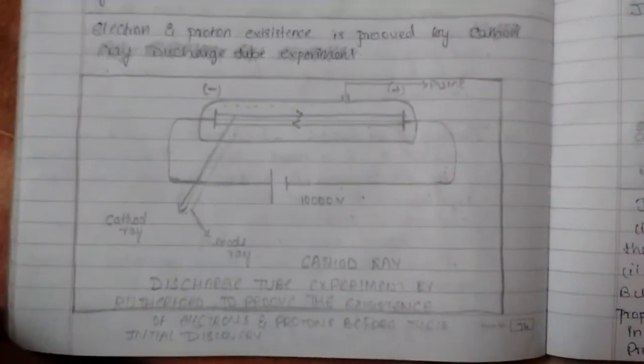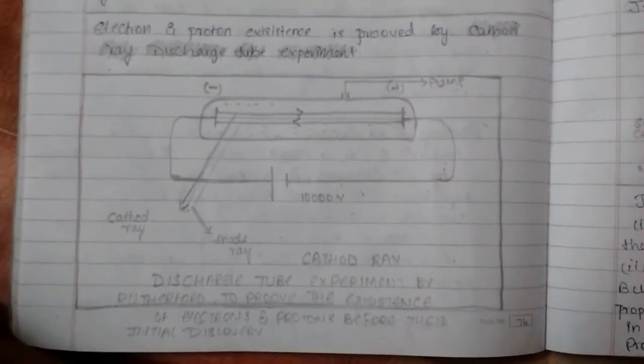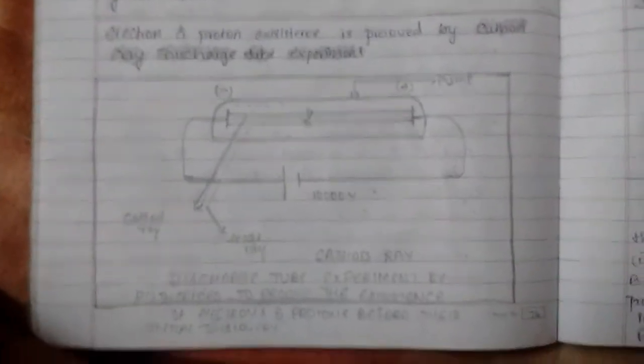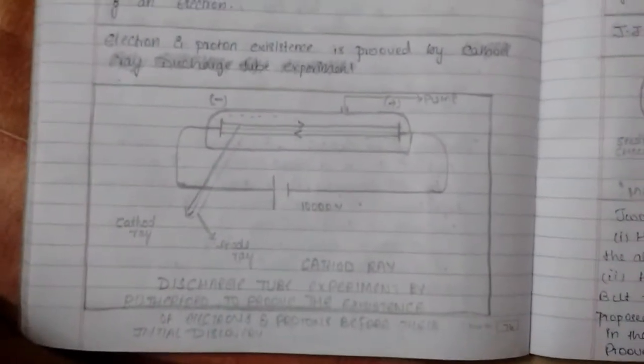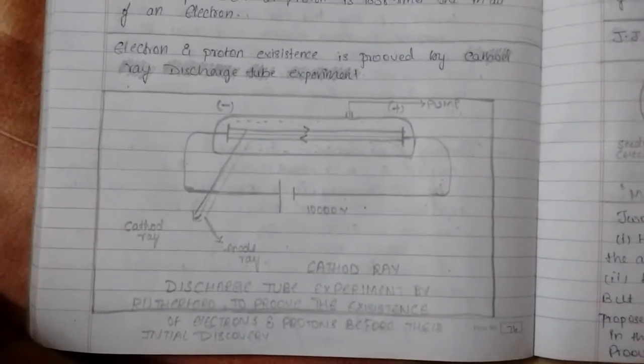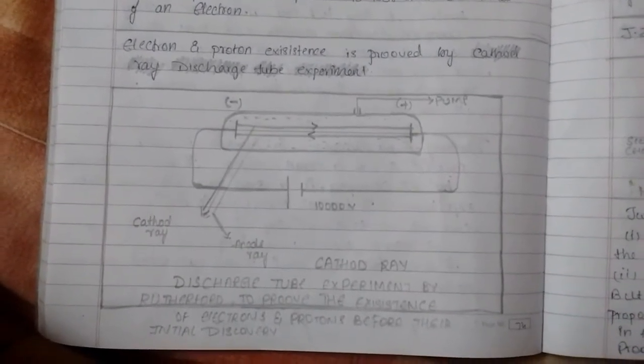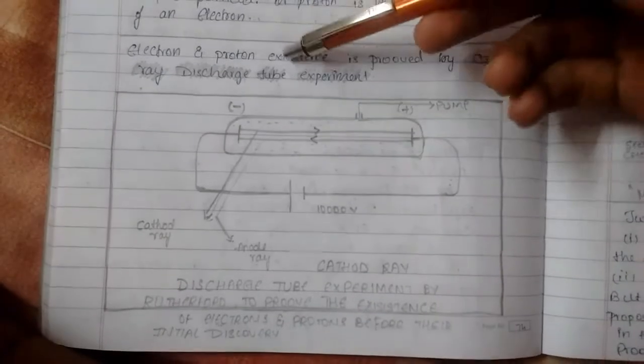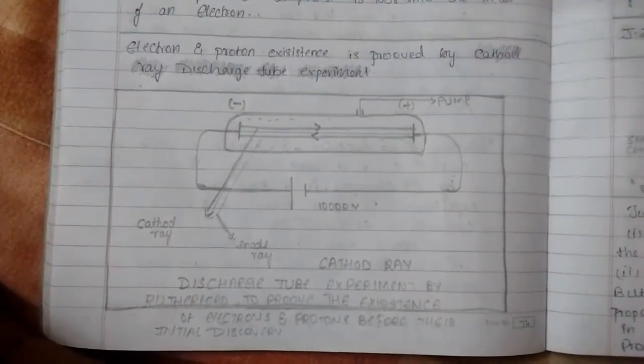And we can see this diagram, which shows the experiment done by many scientists like Rutherford, Thomson, Chadwick, to prove the existence of these three subatomic particles, that is the cathode ray discharge tube experiment. Here, we can see a cylinder, which is filled with any of the gas.